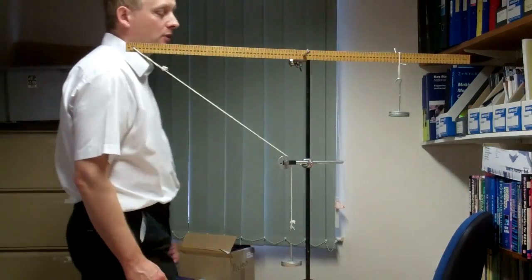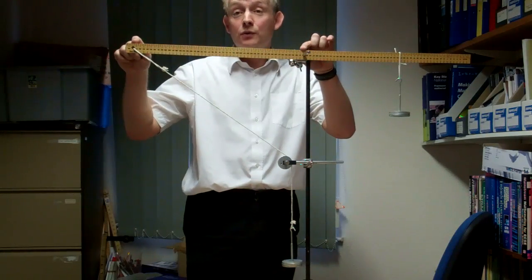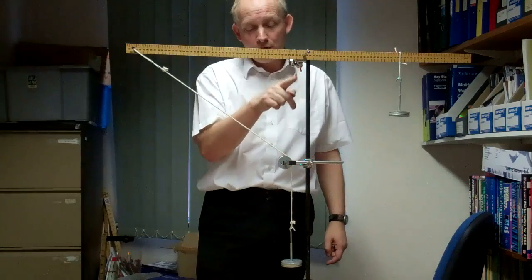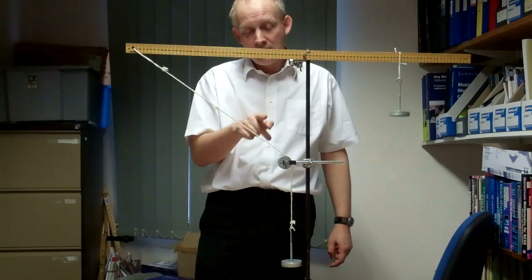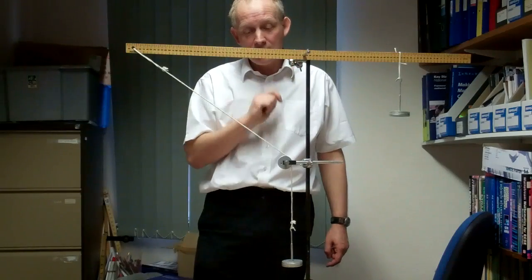So when we calculate moments, it is not the distance between the point at which the force (the tension) is applied to the ruler, but the perpendicular distance between the pivot, or the point about which we take moments, and the line of action of the force.